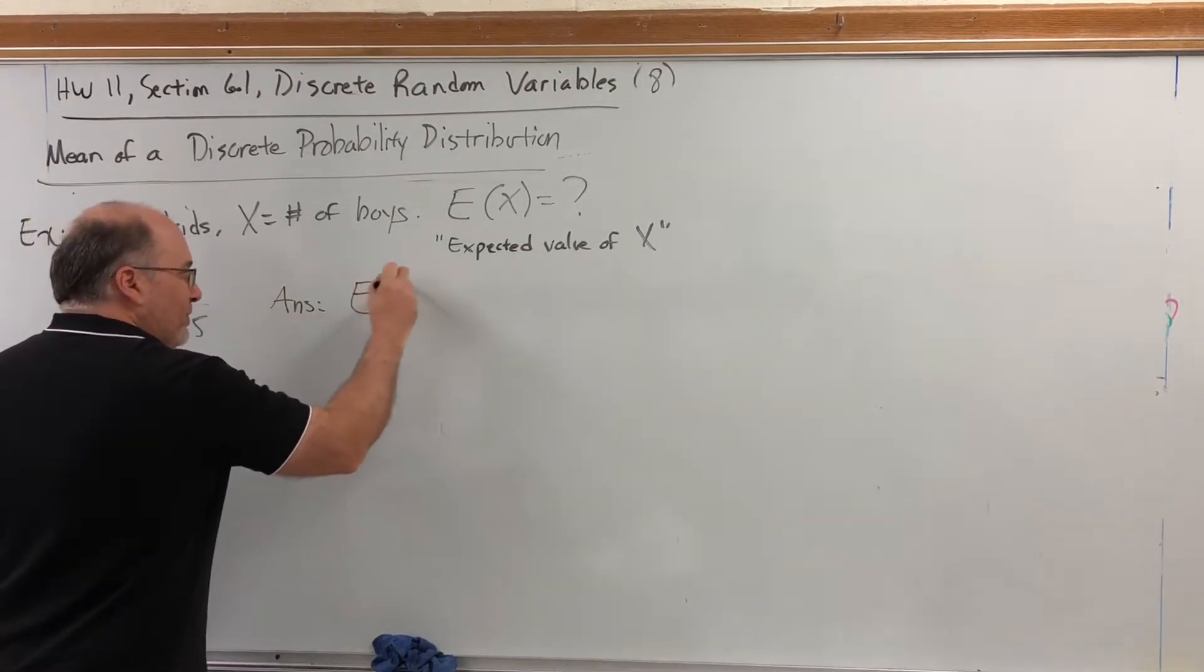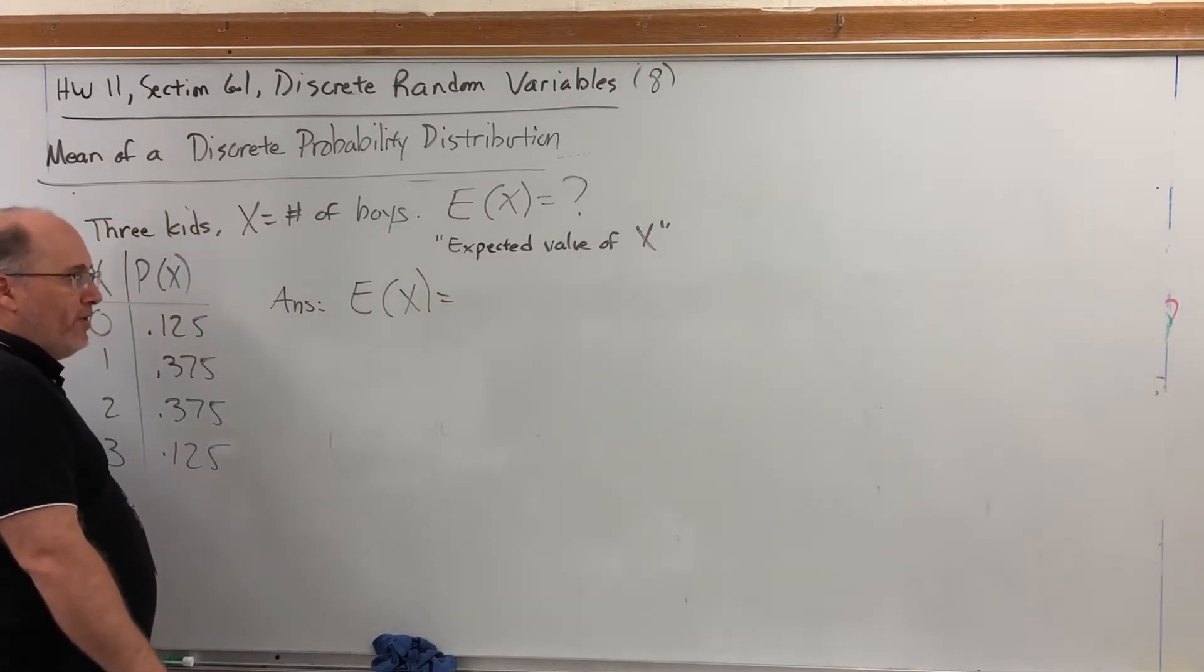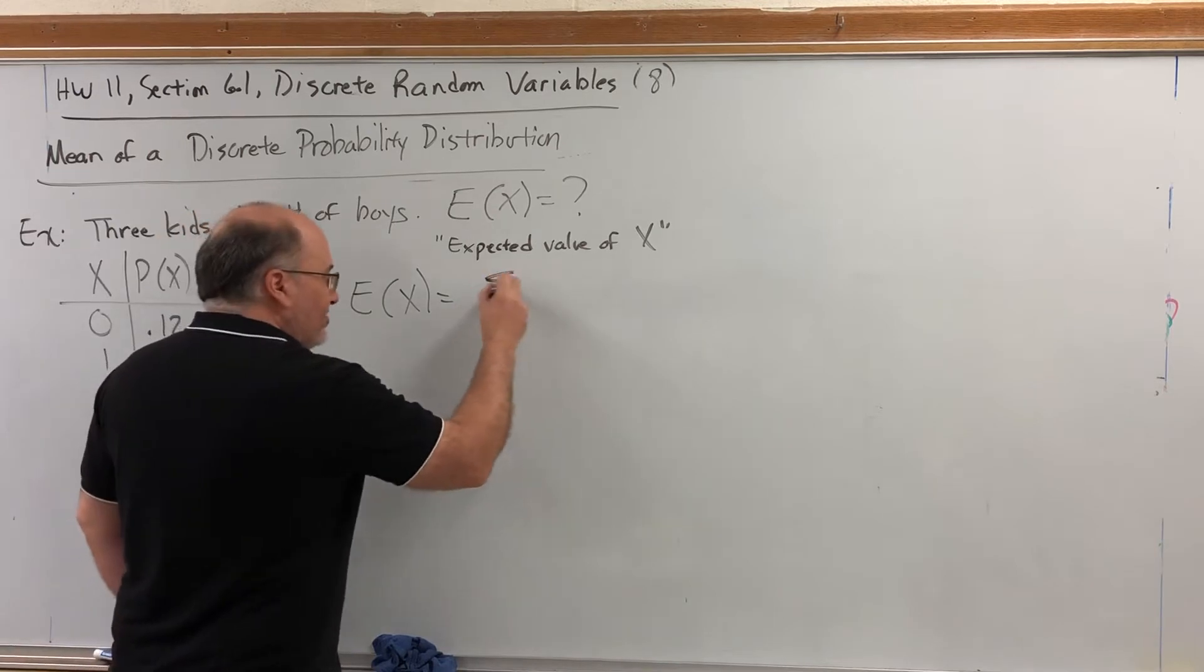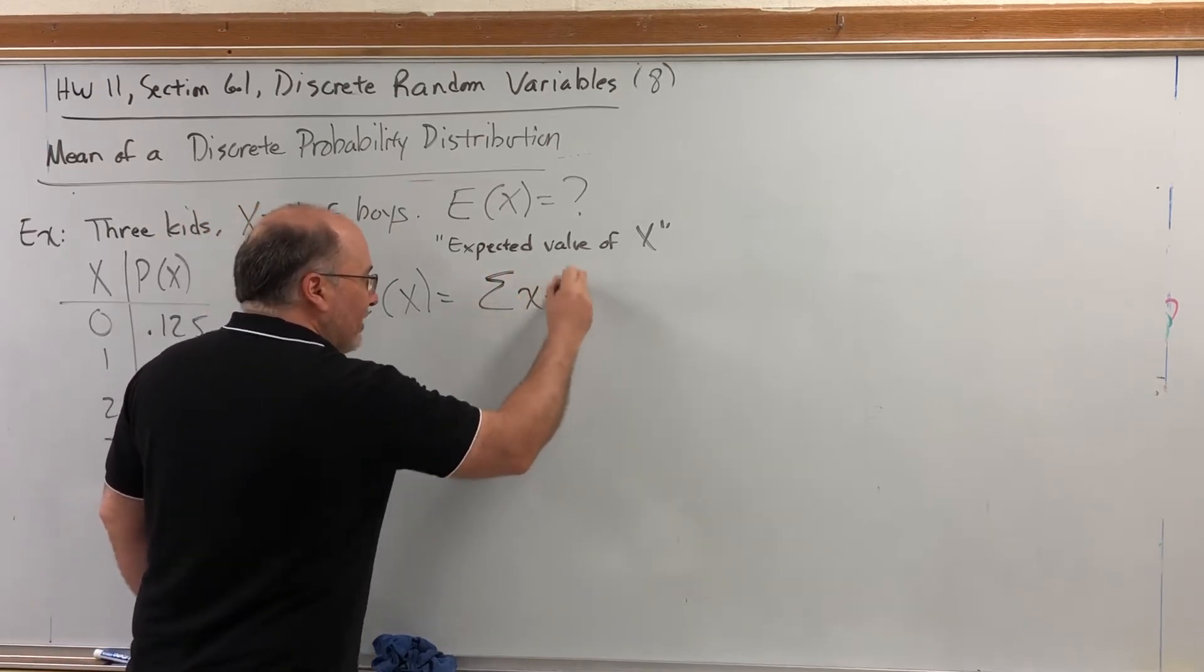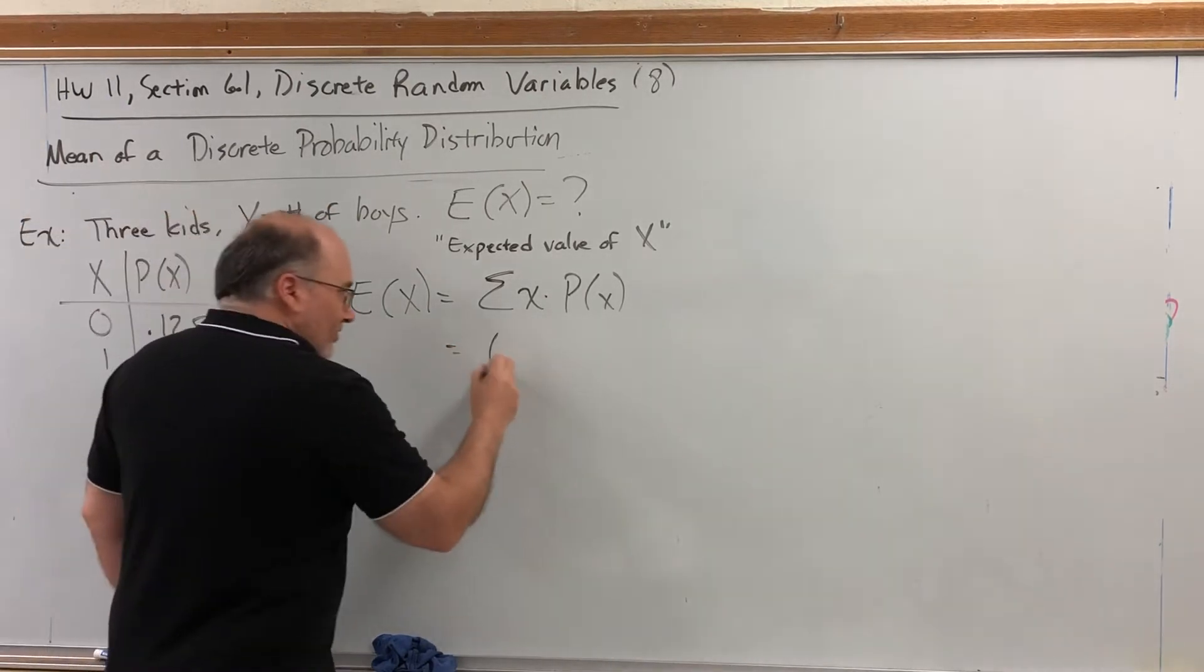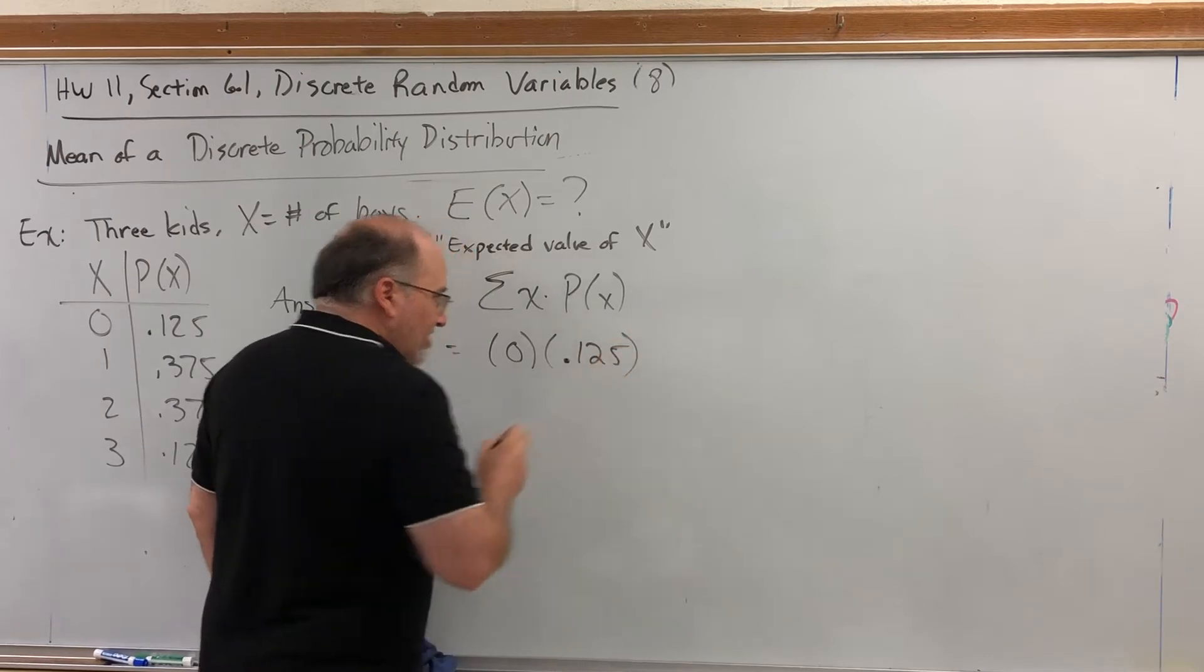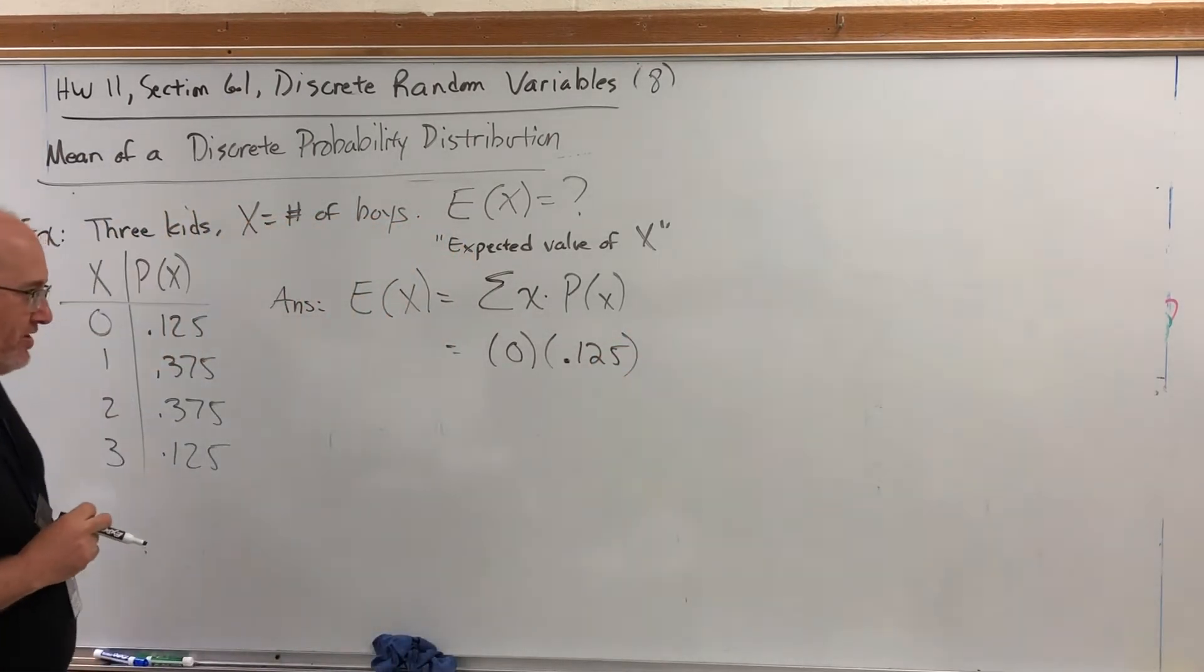Again, the formula for expected value or mean of a discrete probability distribution is the sum of each value times its probability. So, the value of having zero boys will occur 0.125 of the time, or 12.5% of the time.